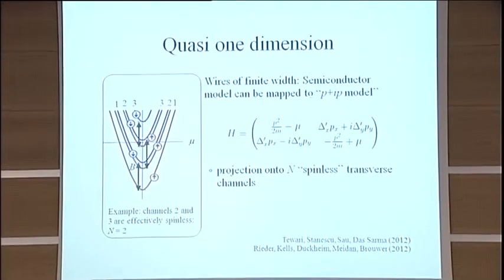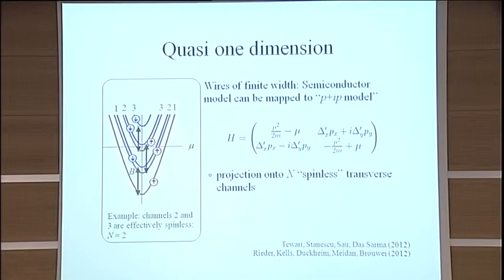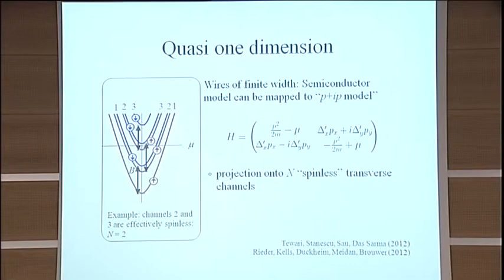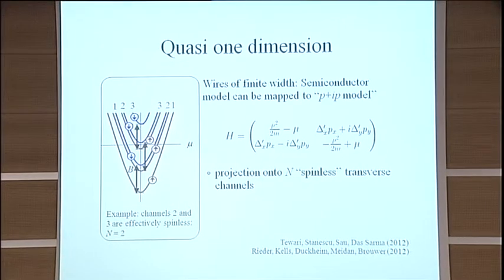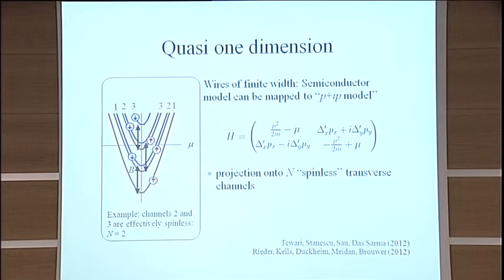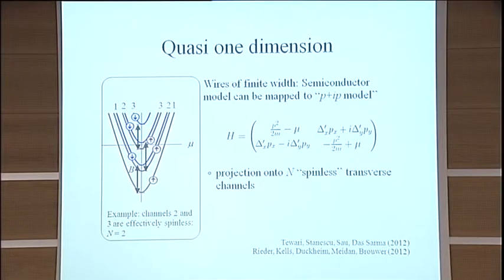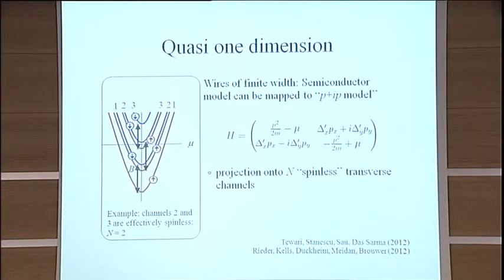And there, there is one subtlety that I think I should say, because otherwise you may have difficulty connecting to the experiment. So you can map the semiconductor to a spinless p-wave model. If you do this in two dimensions, you map it typically to what's called a P plus IP model. It has an order parameter, which is Px plus I times Py. However, what is important is that you have to project only onto the spinless transverse channels.